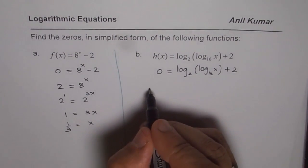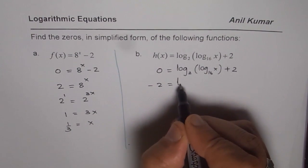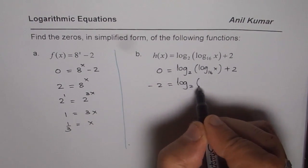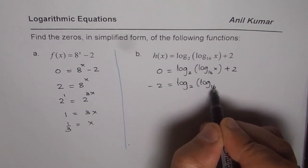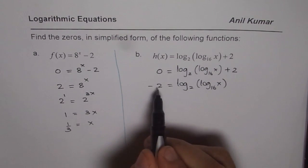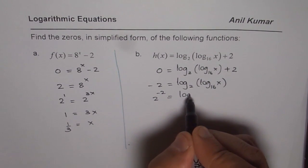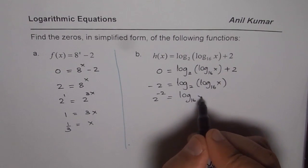So we can bring 2 to this side. So we can write now as minus 2 equals log to the base 16 of x. Now we can write this in exponential form. So we get 2 to the power of minus 2 equals log to the base 16 of x.